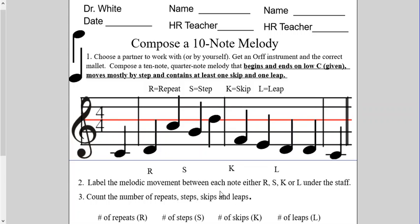What's next? Label the movement between each note: repeat, step, skip, or leap. So, C to D — that's going to be a step. And then D to A — that's going to be a leap. He wanted a leap in there. Then A to G — there's another step, mostly by step. And then G to B — that's going to be a skip. I'm skipping over one note.